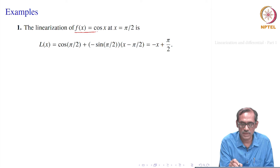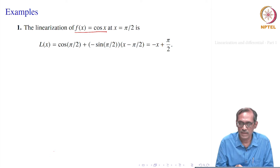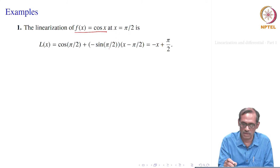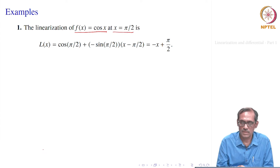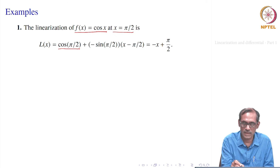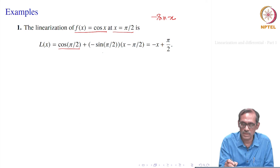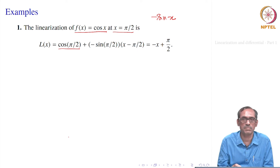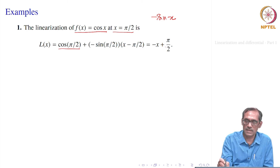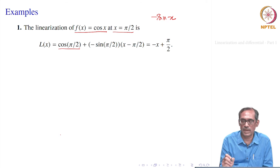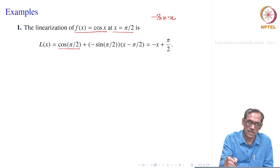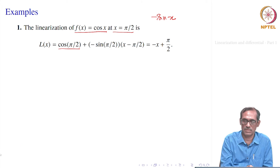Let us take the example f of x equal to cosine of x, which is defined everywhere. We want a linear approximation at x equal to pi by 2. So L of x equals f of pi by 2 plus f prime of pi by 2 times x minus pi by 2. Since f prime of cosine x is minus sin x, we get minus sin of pi by 2 times x minus pi by 2. Since sin of pi by 2 is 1 and cosine of pi by 2 is 0, this gives minus x plus pi by 2. So that is the linearization of cosine x at x equal to pi by 2, and in a small neighborhood of pi by 2, values of cosine x are approximated by L of x.